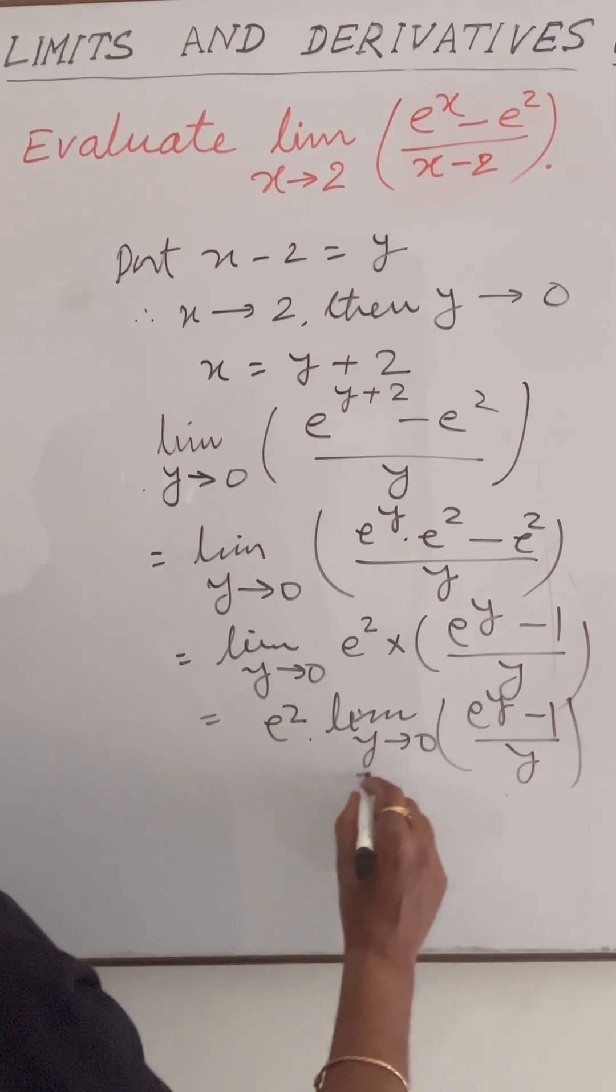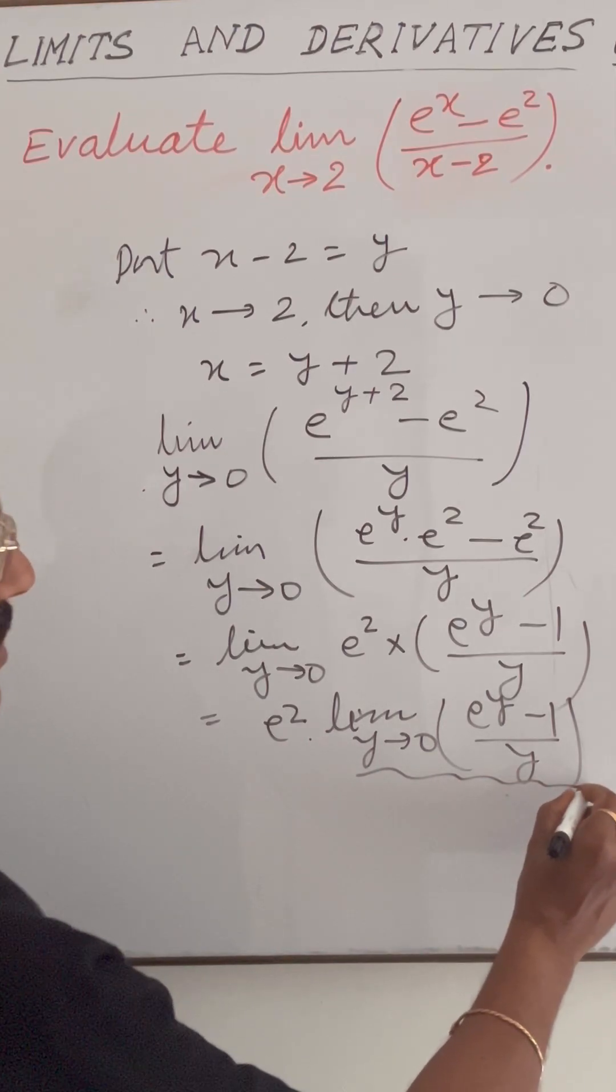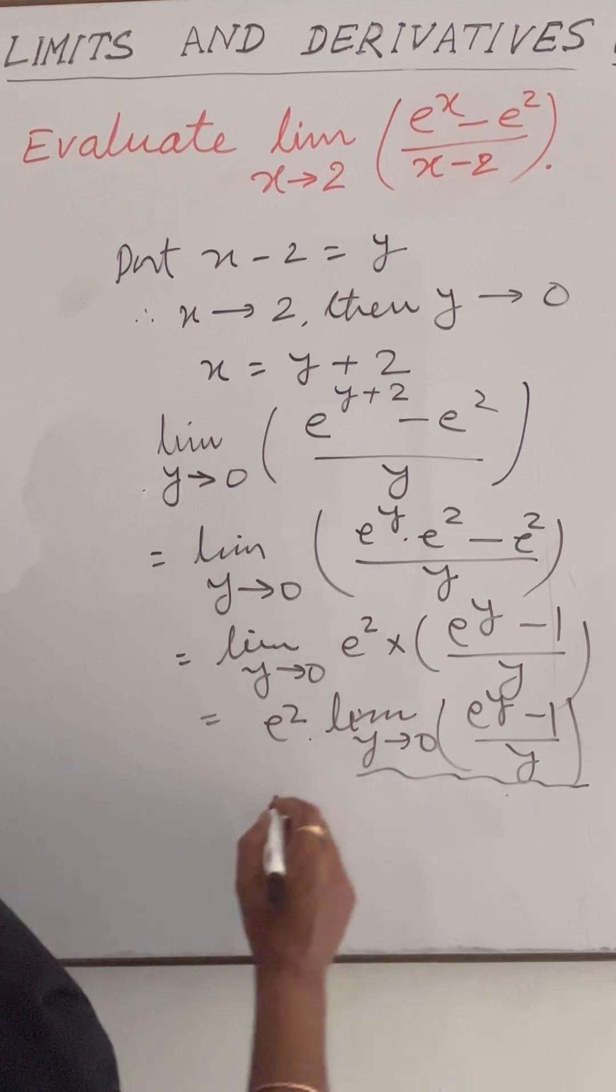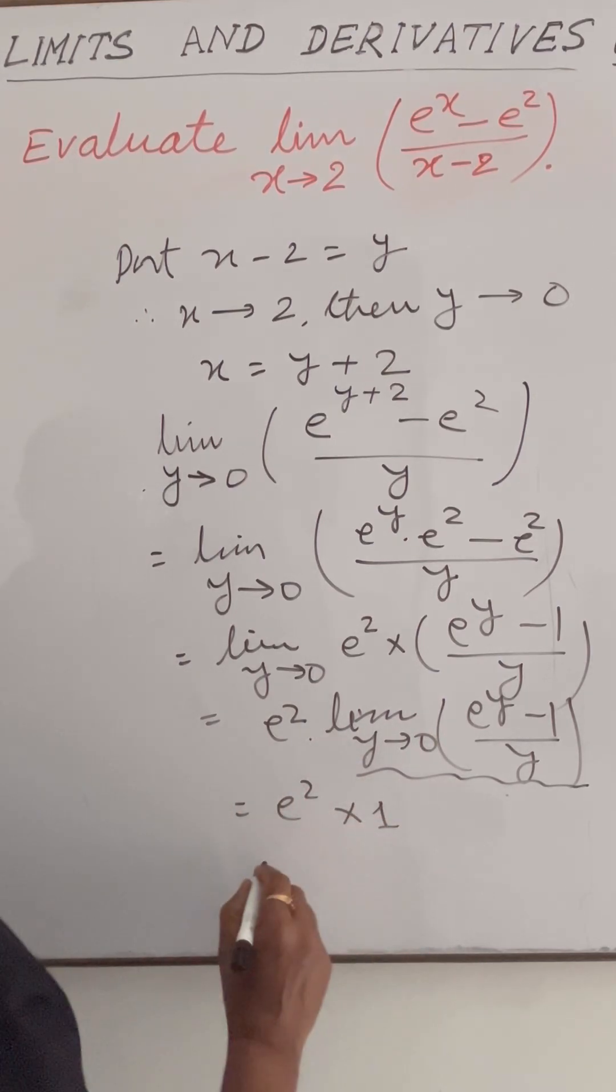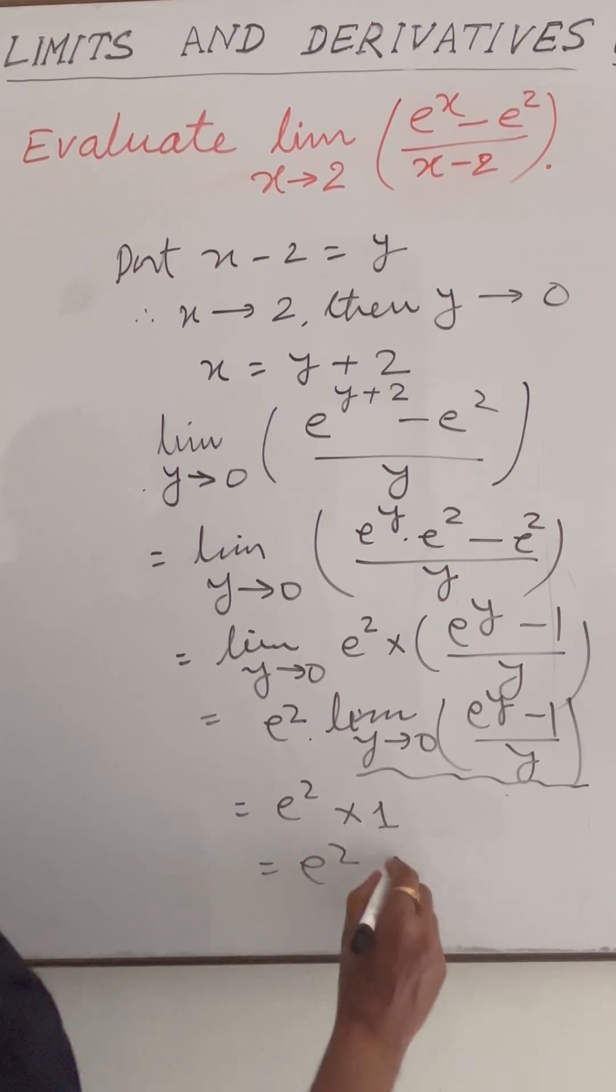We know a formula we have already discussed in several videos: this is equal to 1. So this is equal to e squared times 1. Finally, we are getting the answer e squared.